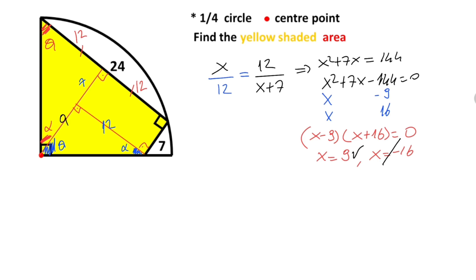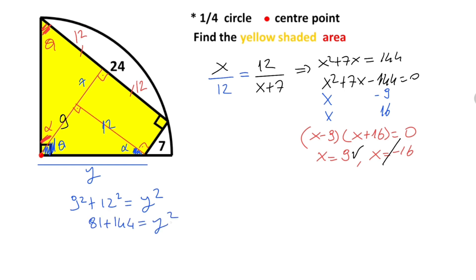That's right here — x equals 9. And for this triangle, if we apply the Pythagorean theorem, let's call the hypotenuse y. We get 9 squared plus 12 squared equals y squared. So 81 plus 144 equals y squared. Y squared equals 225, that means y equals 15 units.